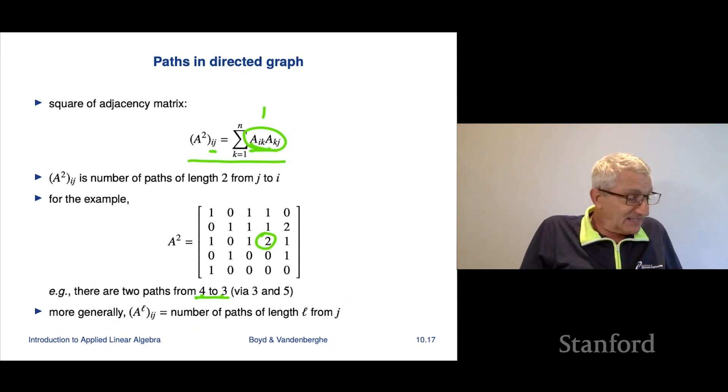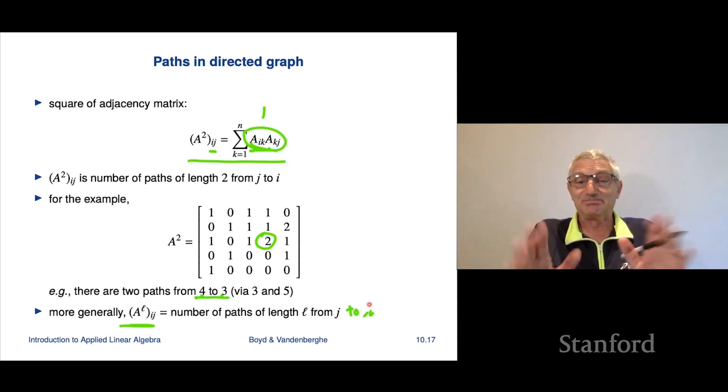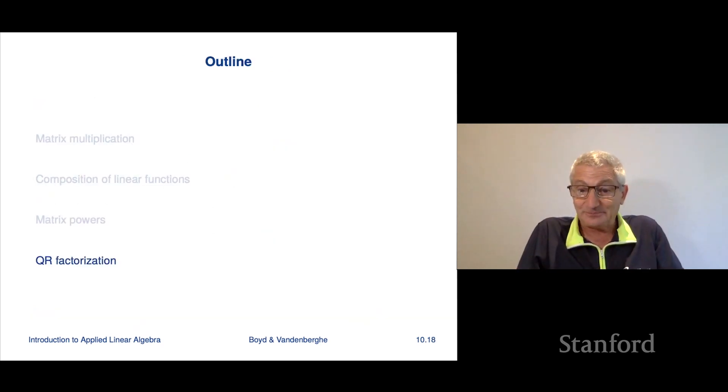And so more generally, if I take the Lth power of a matrix, which is the adjacency matrix, then it's fully interpretable as the ij entry is the number of paths of length L from j to i. So that's what this is. There is a small typo there. Oops.